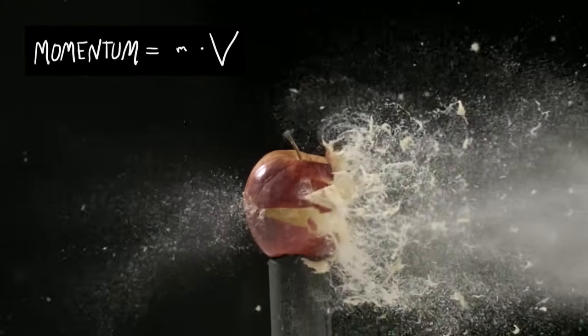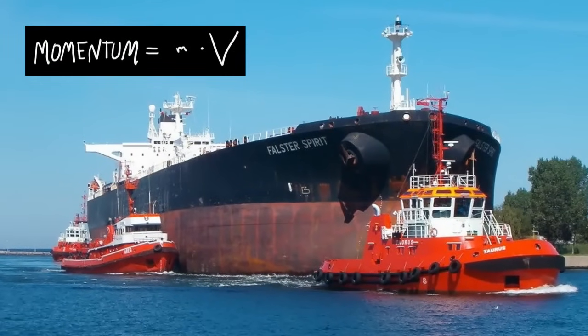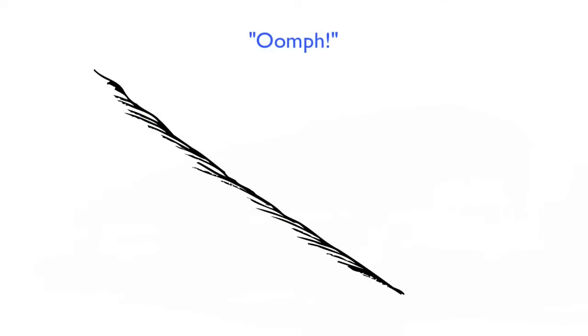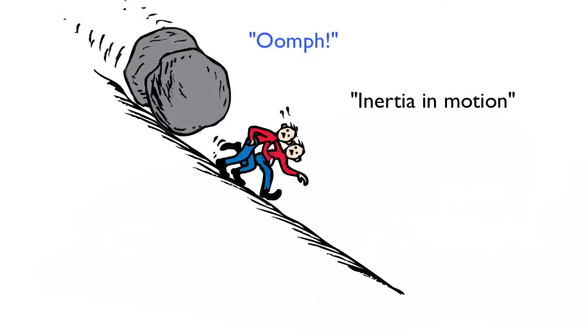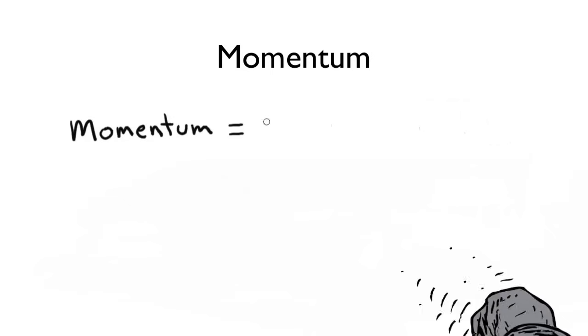A fast-flying tiny bullet and a creeping massive oil tanker are both difficult to stop. Both have a lot of oomph. That is, a lot of inertia in motion, which you now know to be what we call momentum.